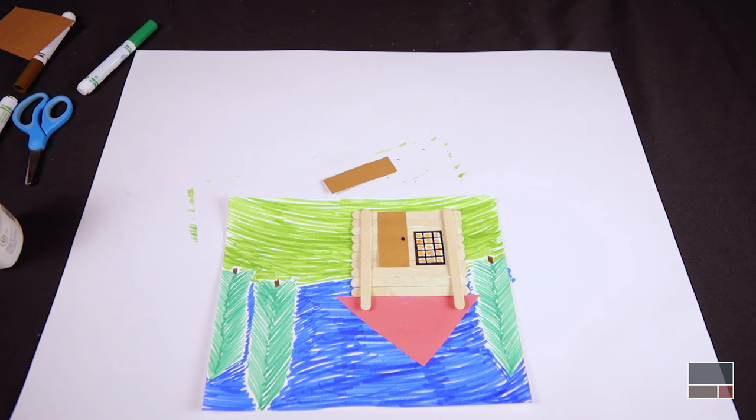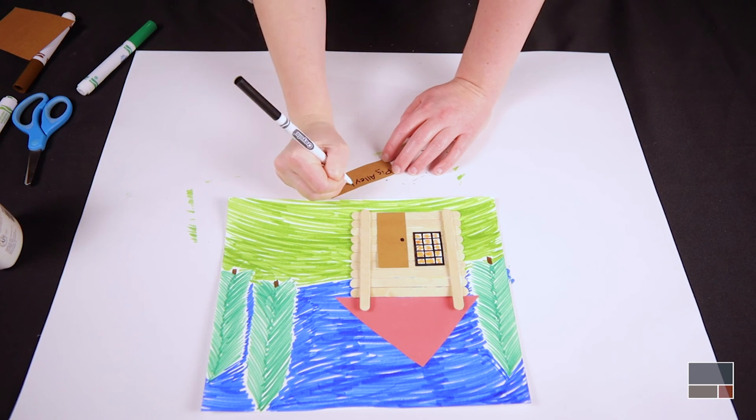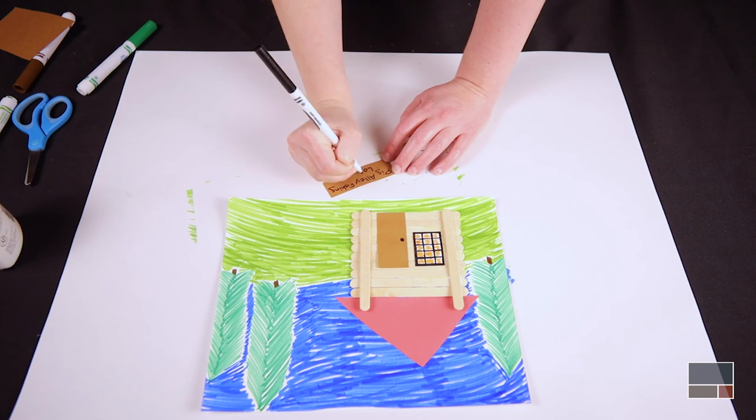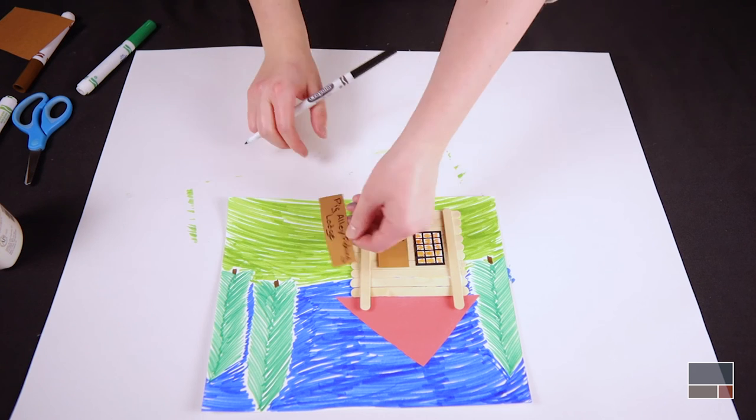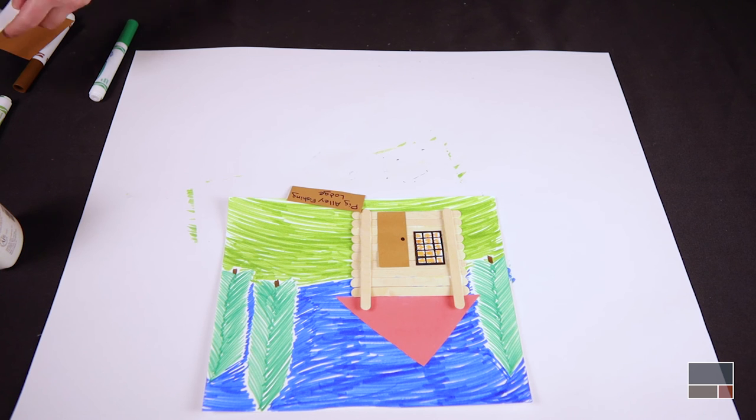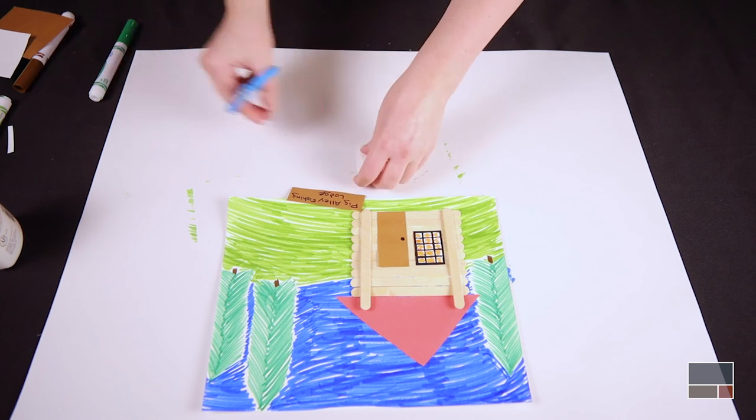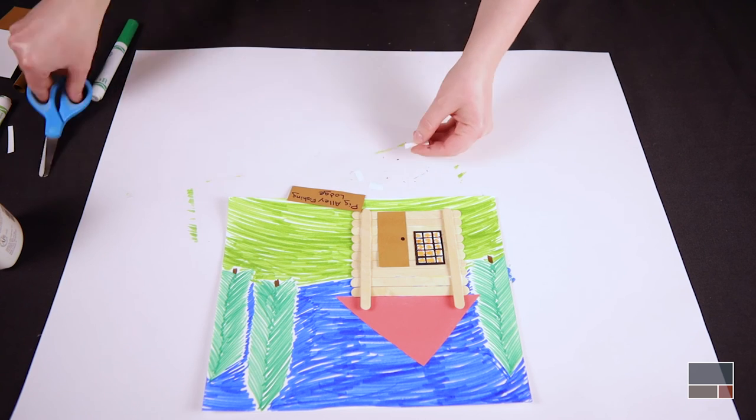Last, decide on a name for your lodge. We used brown colored paper to make a sign to tell everyone what our lodge is called. Write the name of your lodge onto your sign or ask a grown-up to write it with you. Glue your sign near to or onto your lodge. You can add legs to your sign if you want.